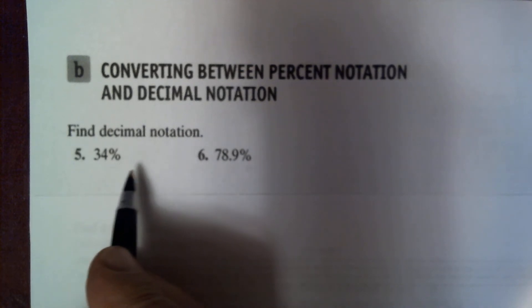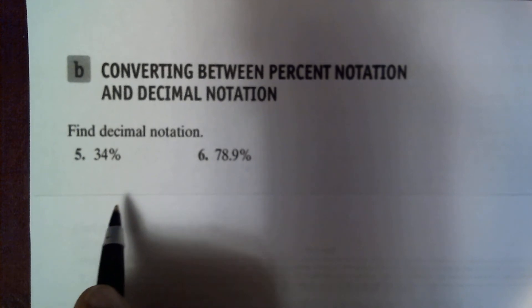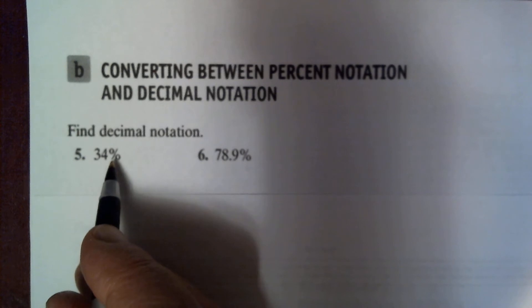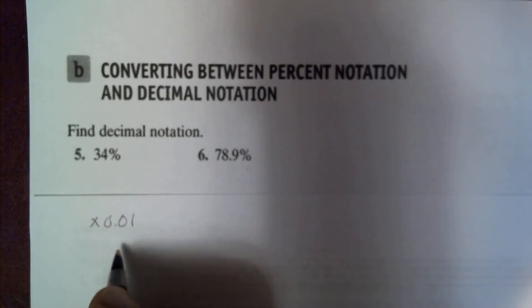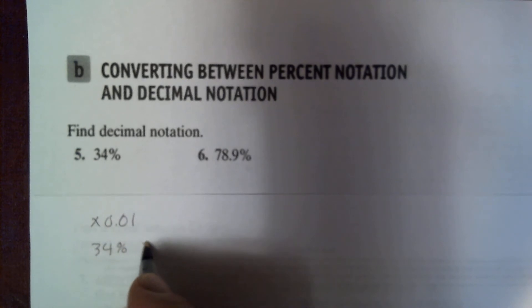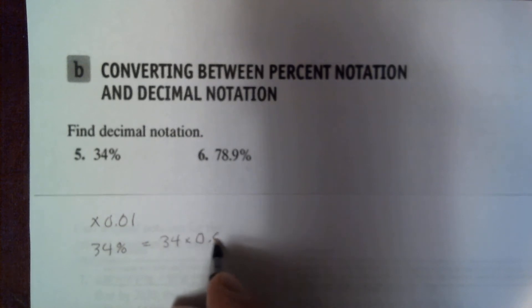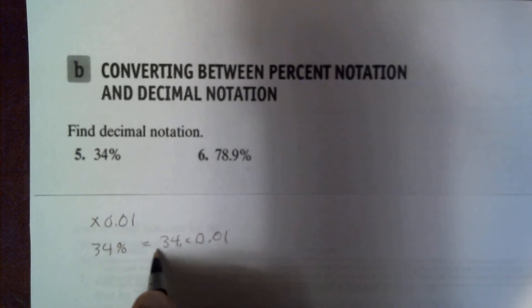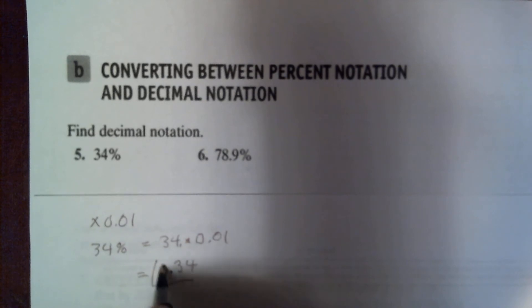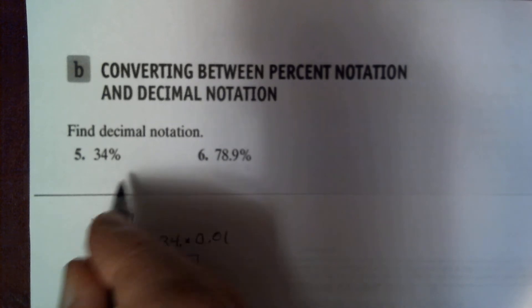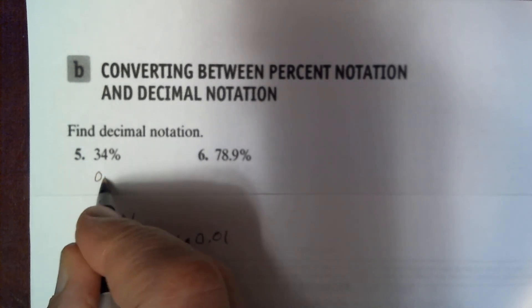To find the decimal notation for a percent, replace the percent symbol with 0.01. So 34 percent becomes 34 times 0.01, which means moving the decimal two places to the left, giving us 0.34. That is the decimal notation for 34 percent.